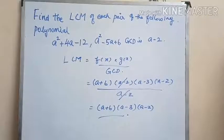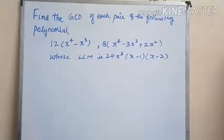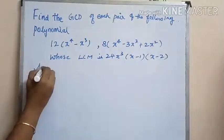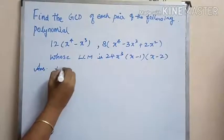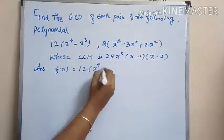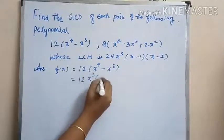We get the LCM of the following polynomials. Here we have the next problem: find the GCD of the given pair of polynomials whose LCM is given. Let us consider f(x) as 12 into x to the power 4 minus x cubed, which can be factorized as 12 into x cubed into (x minus 1).